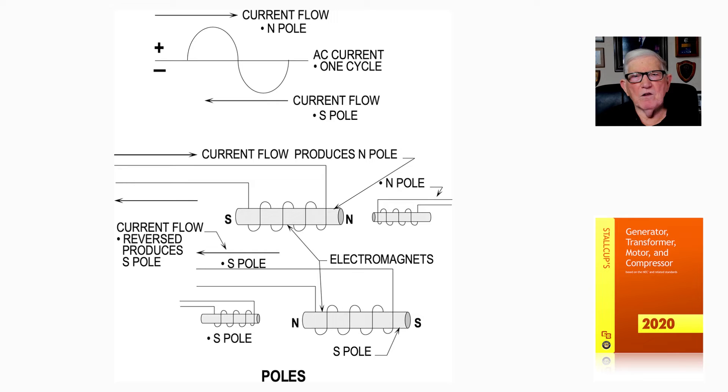Look at the very top of the illustration. We have current flow coming in, and if it's a plus pole then it's a north. But as it alternates below the scale, the current flow becomes a south pole. As the current alternates, those poles just keep changing.